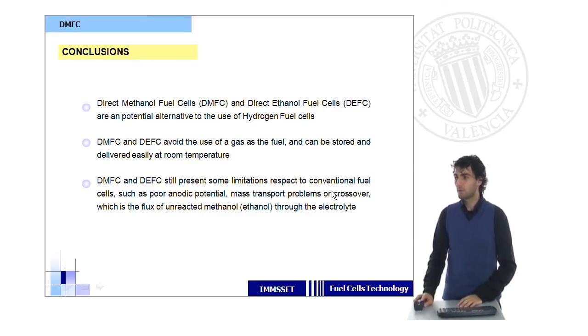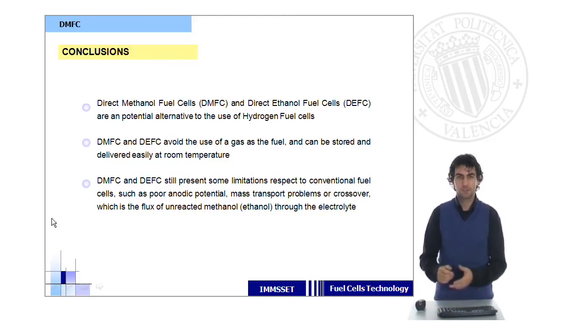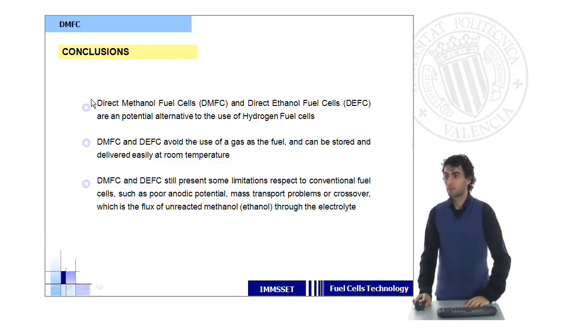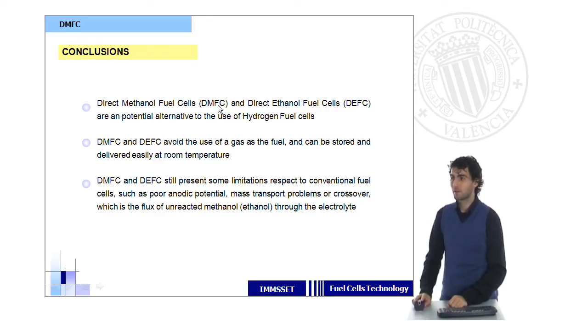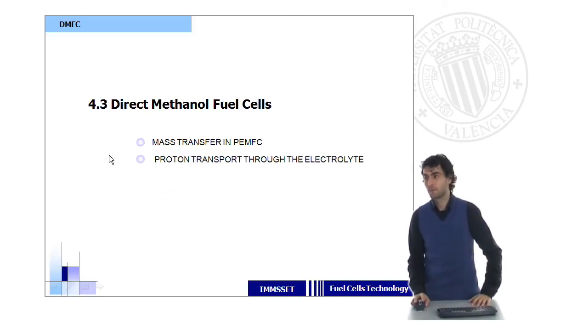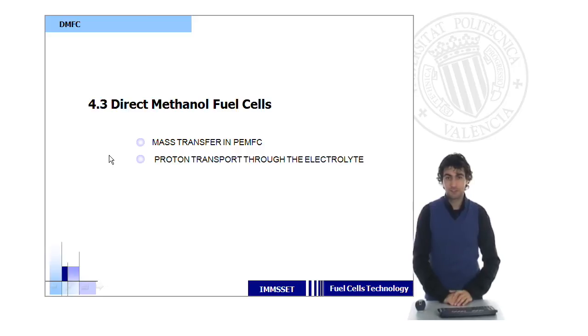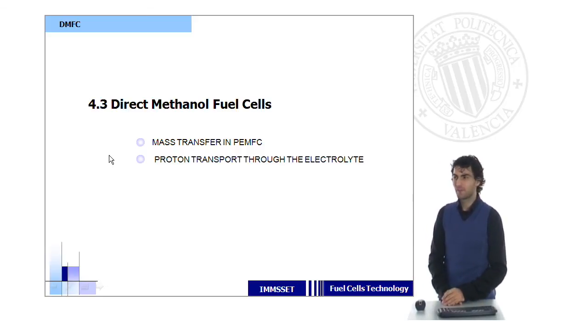In this case, one of the most important effects is the so-called crossover phenomenon, which is the flux of unreacted methanol or ethanol through the electrolyte. These, some other anodic factors, and some mass transfer effects, are the features that must be improved if we want to have direct methanol fuel cells in the market very soon. And I hope the next time that I see you, this is a reality. Thank you for your attention.